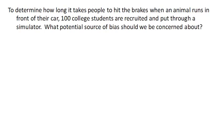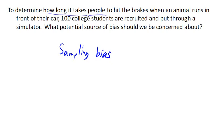To determine how long it takes to hit the brakes when an animal runs in front of a car, a hundred college students are recruited and put through a simulator. The issue here goes back to where we started — this is sampling bias. It really depends on who the target population is, but if we're trying to figure out how long it takes people in general, using college students as our sample is probably going to slant the results. College students are probably going to have a quicker reaction time than some other Americans, such as senior citizens. So this sample is probably not representative of the population and is likely going to skew the results.